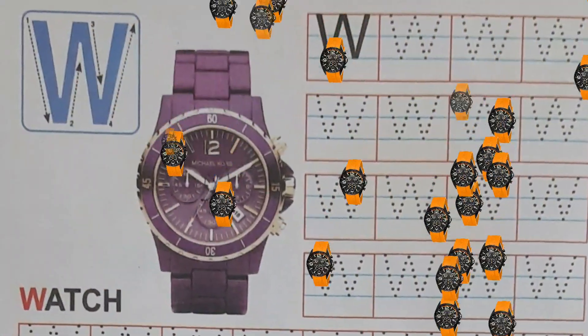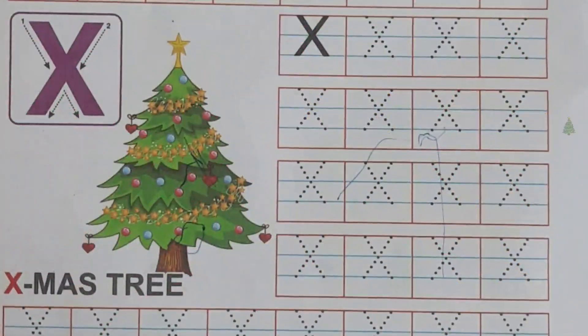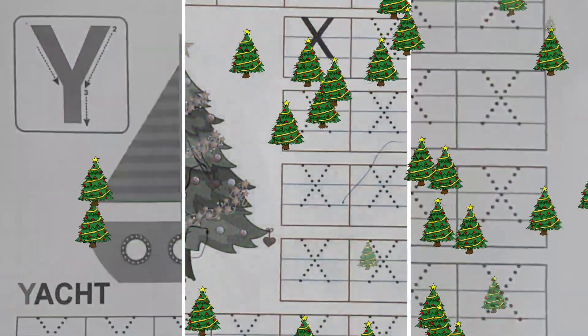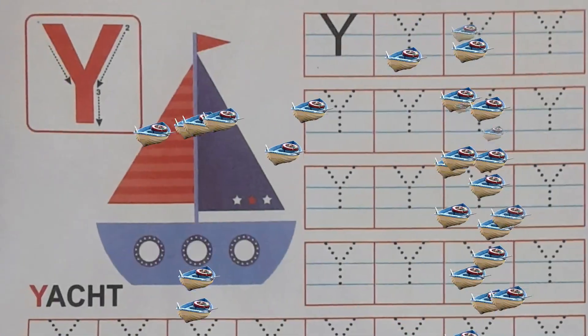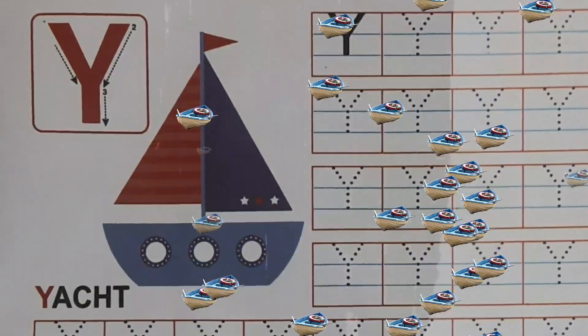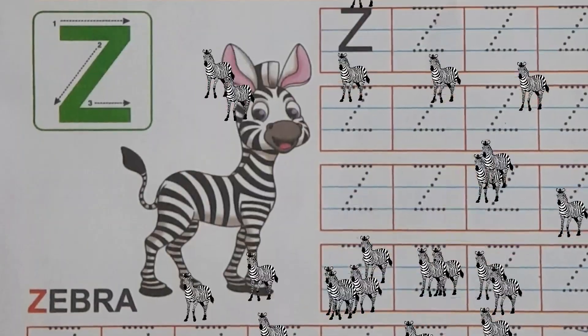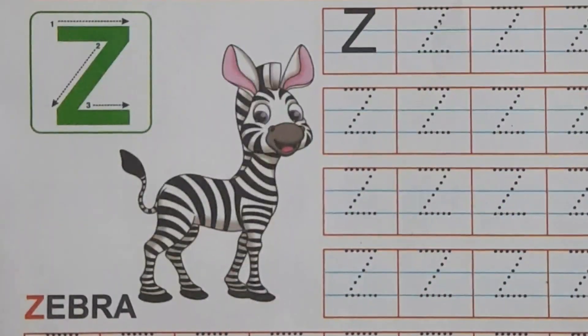W for Watch, X for Xmastery, Y for Yacht, Z for Zebra. Bye-bye.